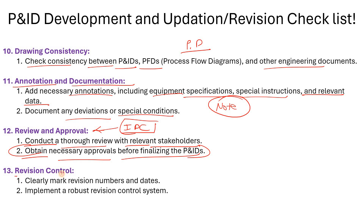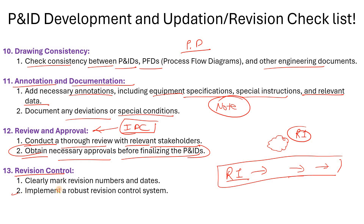Then revision control — clearly mark revision numbers and dates. You can show revisions using a cloud symbol, and write R1, R2, R3 in your title block along with the purpose of the revision, who checked the P&ID, and who approved it. When you prepare a revised P&ID, also send it for review before approval, and review it thoroughly with stakeholders and managers.